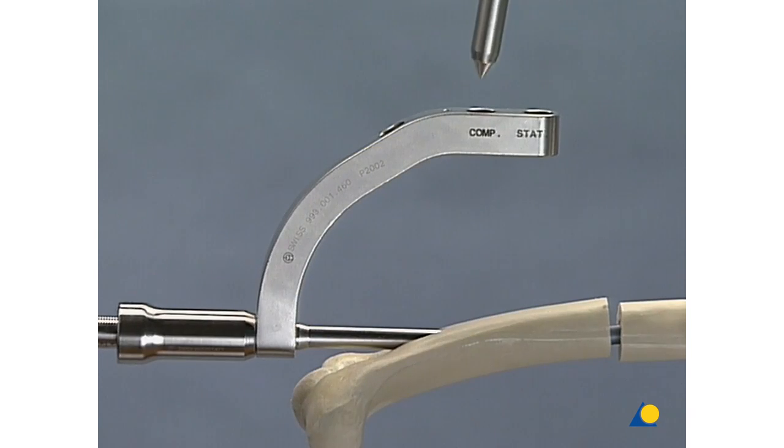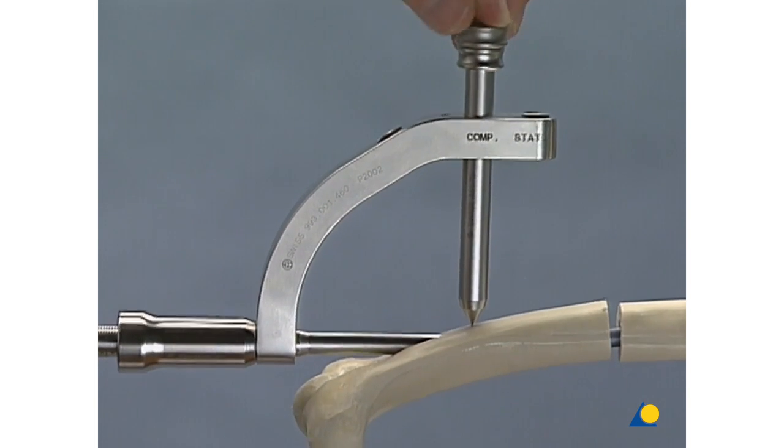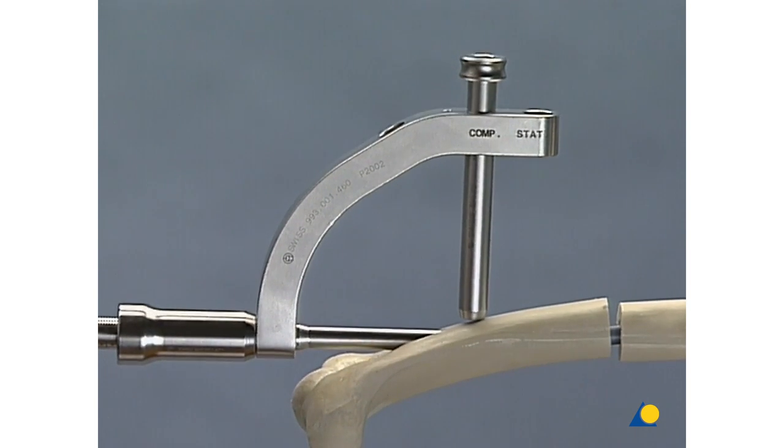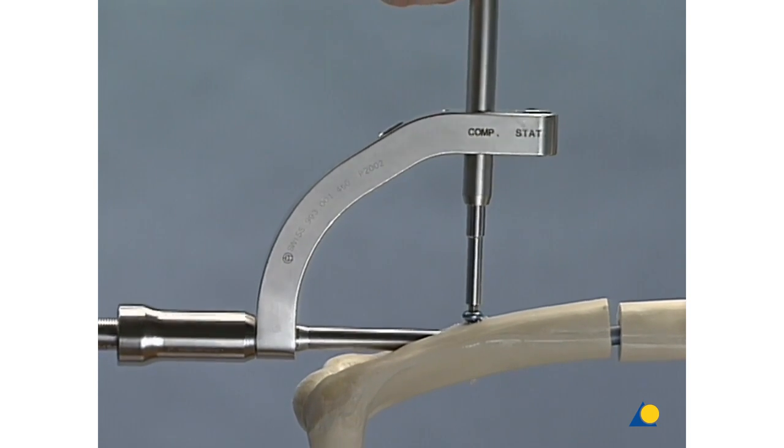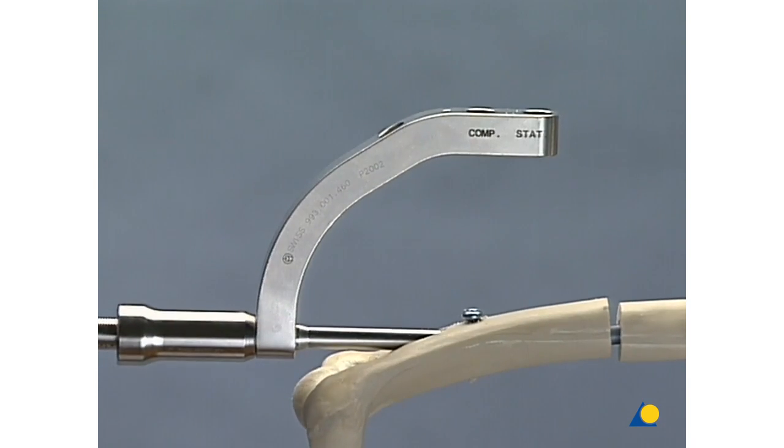Now, insert a distal locking bolt through the compression locking hole. Be sure that both locking bolts have a good hold in the near and far cortex. Appropriate nail length is important to achieve this.